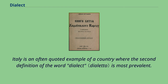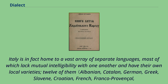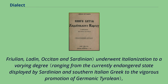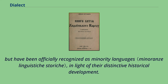Italy is an often-quoted example of a country where the second definition of the word dialect is most prevalent. Italy is home to a vast array of separate languages, most of which lack mutual intelligibility with one another. Twelve of them — Albanian, Catalan, German, Greek, Slovene, Croatian, French, Franco-Provençal, Friulian, Ladin, Occitan, and Sardinian — have undergone Italianization to a varying degree but have been officially recognized as minority languages in light of their distinctive historical development.